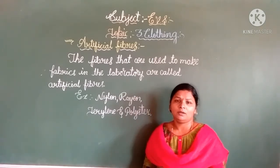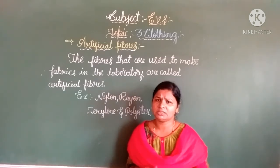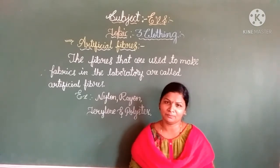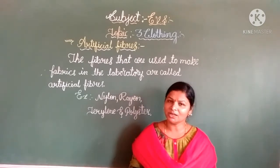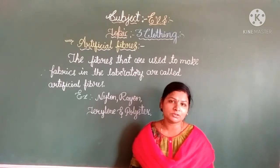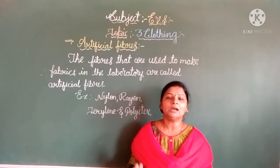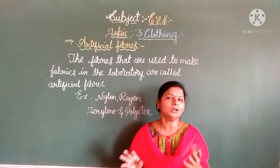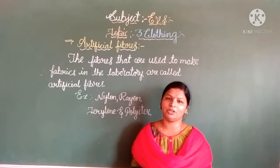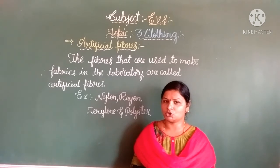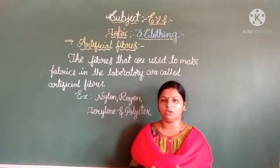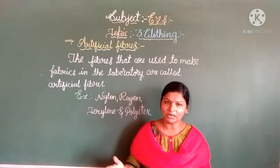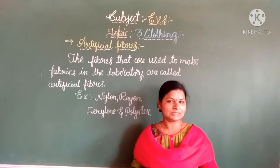Which cloth is most comfortable? In summer, we prefer cotton cloth because it absorbs the body's wetness and allows air circulation. In winter, we wear woolen cloths. In the rainy season, we wear jerkins and raincoats. What we wear in our daily life also depends upon the climatic condition and different seasons.